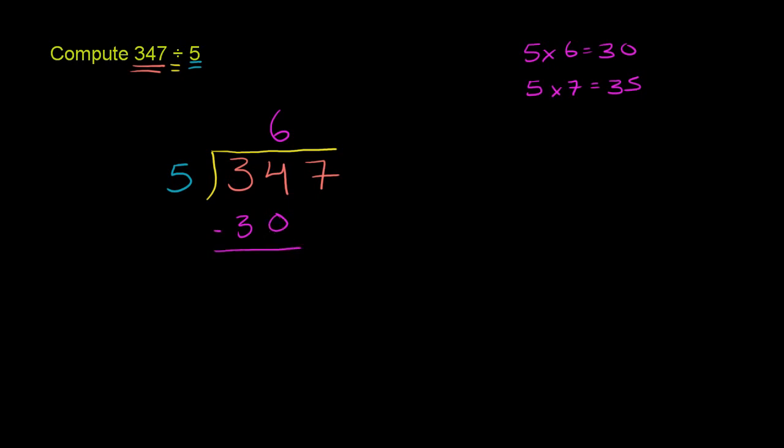34 minus 30. Let me do this in a new color. 34 minus 30. Well, 4 minus 0 is 4. 3 minus 3 is 0. And then we can bring down this 7 here.